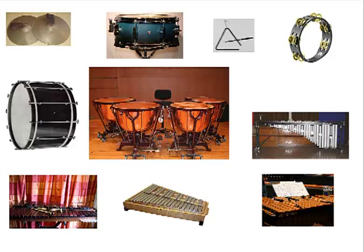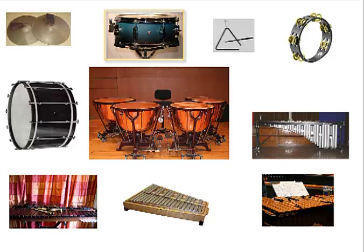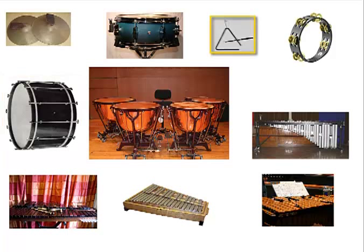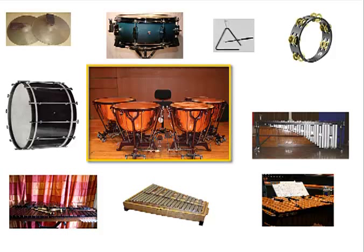Finally, we are left with the percussion section. This is the largest and most varied section. Typical percussion instruments you would find in an orchestra are the cymbals, snare drum, bass drum, triangle, tambourine, and timpani. A percussion instrument is basically anything that can be struck, beaten with a stick or a hammer, scraped, or shaken.